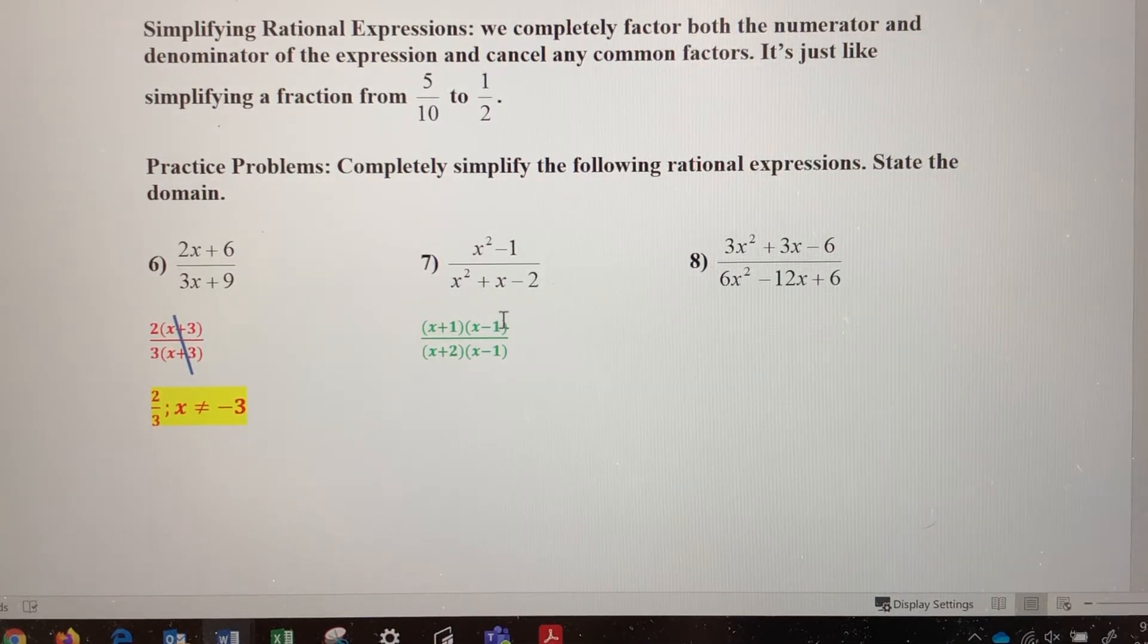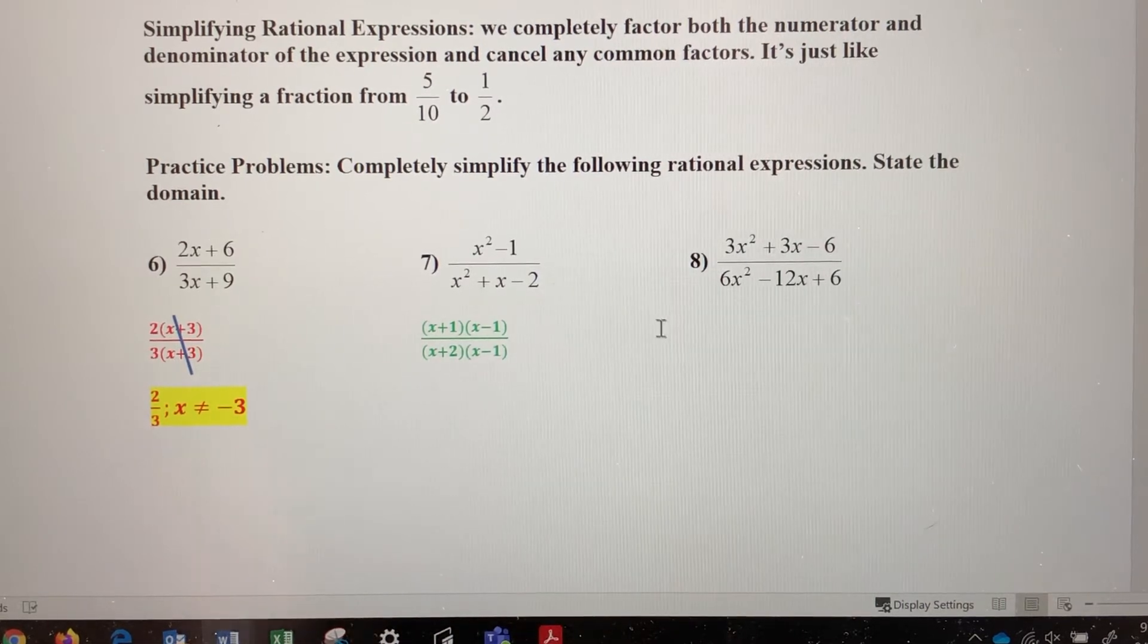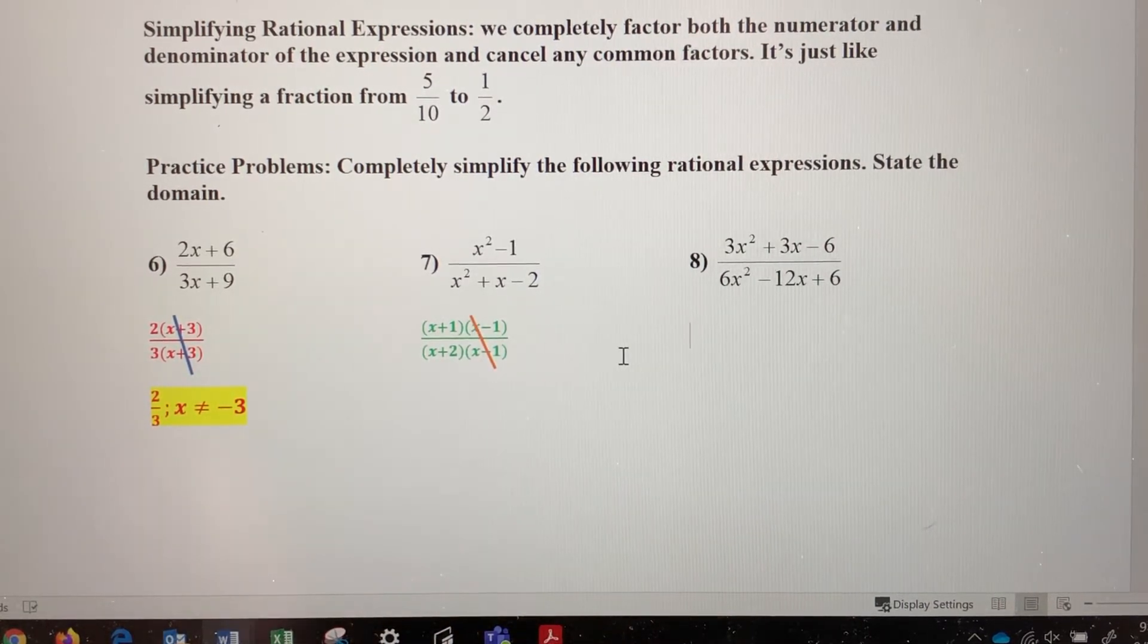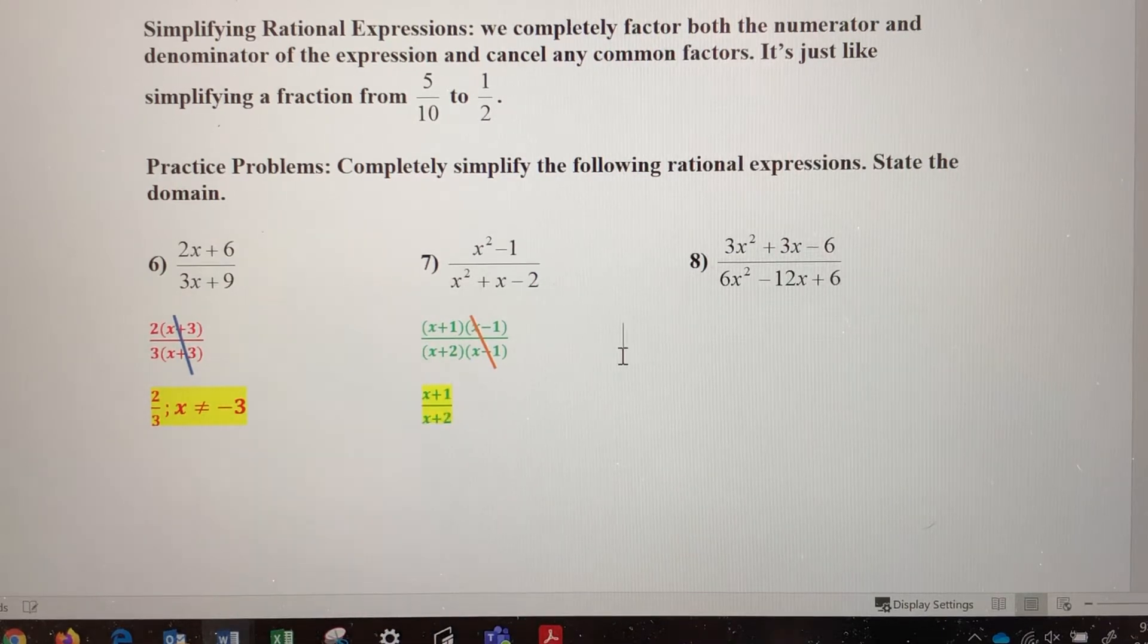Now, what happens here, these two factors are the same, so those x minus 1s can cancel out. So my answer is going to be x plus 1 over x plus 2. This expression in simplest form turns into this.